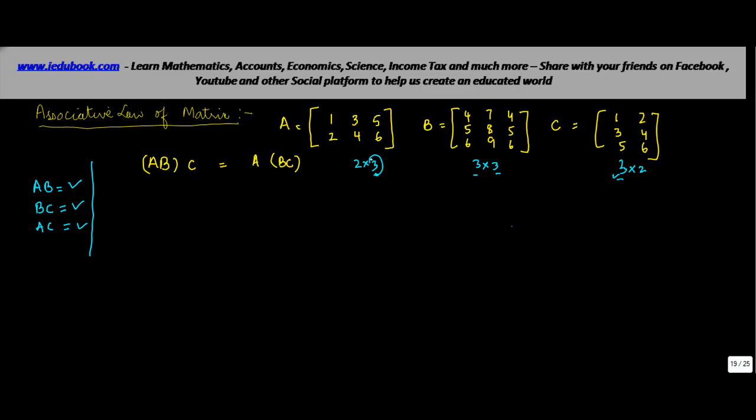So, what is the order of A, B? A, B should be equal to 2 into 3. We learned earlier, that if this is M into N, and this is N into P, then the order of the matrix, which represents the multiple of these two, is going to be M into P. So, A, B will be of the order 2 into 3. B, C will be 3 into 2. And C, A, well, I don't think we need to do that here, so let's just leave that for the time being.